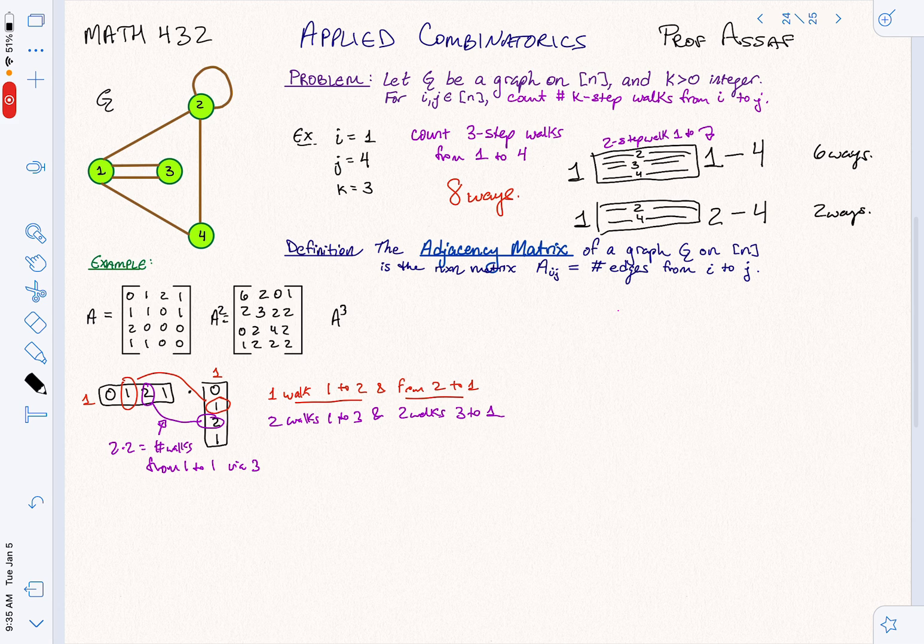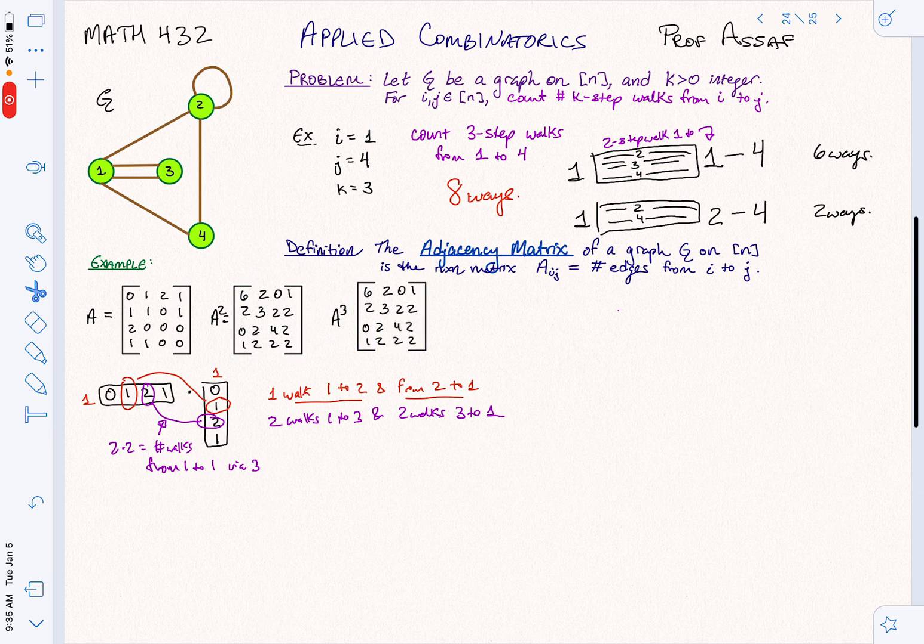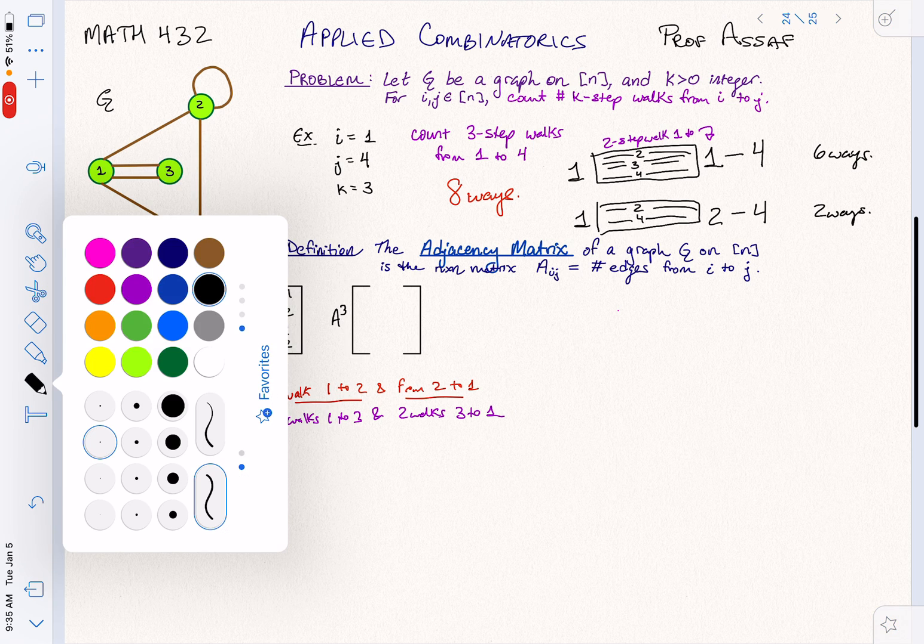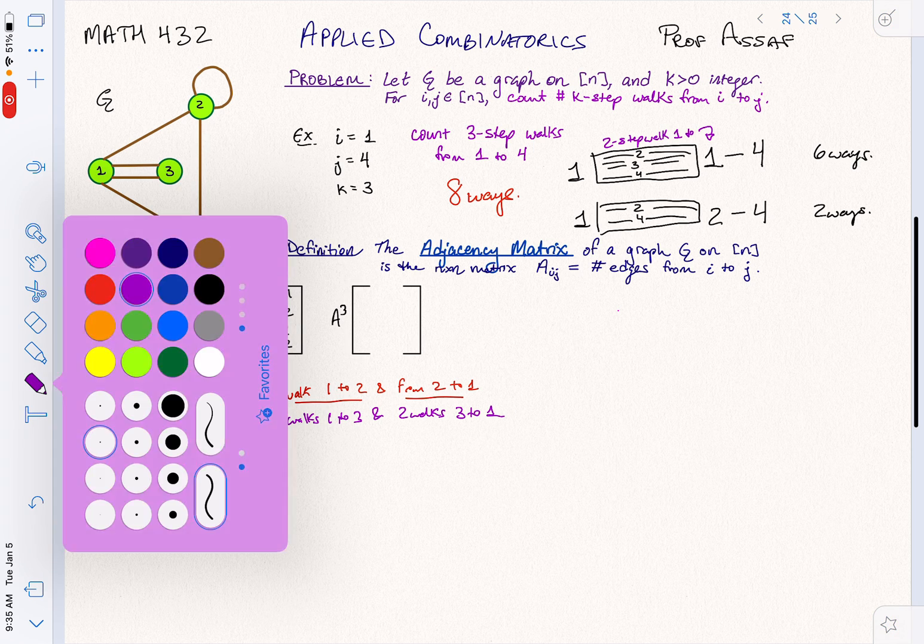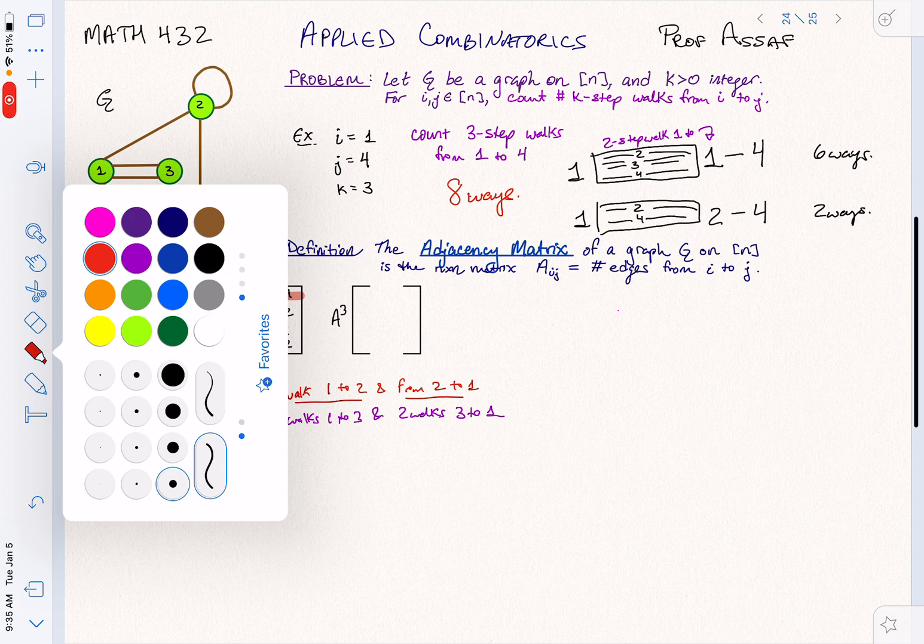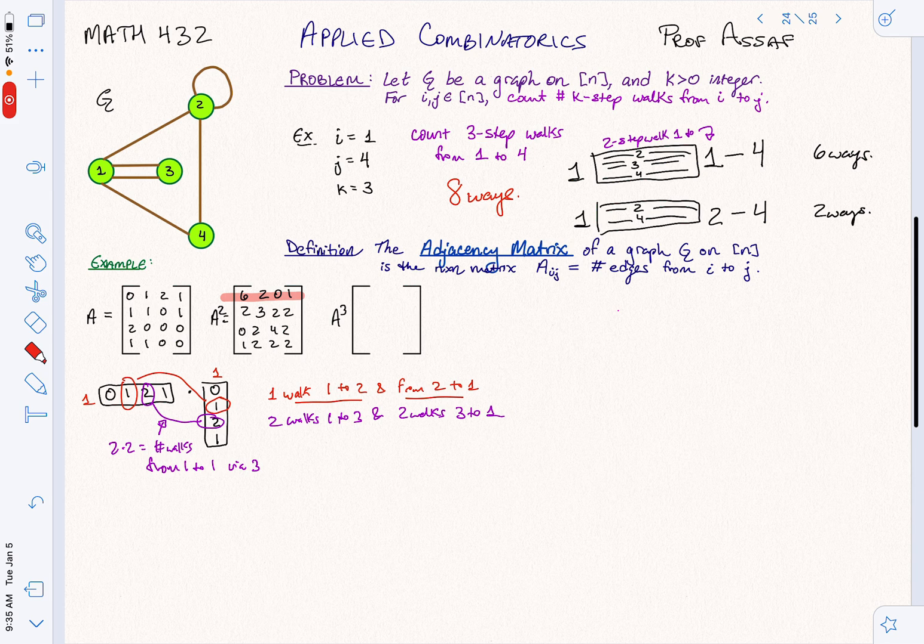So this is A squared. And then we can keep going. I could write down A cubed. So what's A cubed? Well, let me take this matrix again. I'm going to multiply it by A. And we can work out what are the entries. And maybe I'll just do one of them. Maybe let's actually just work it out. And let's take this row. Maybe I'll highlight it. We'll take this row. And we're going to multiply it by, so that's going to say from one. And where do we want to land up? Let's land up at four.